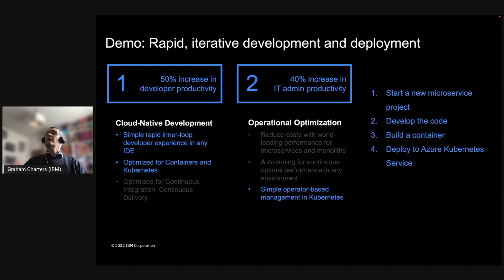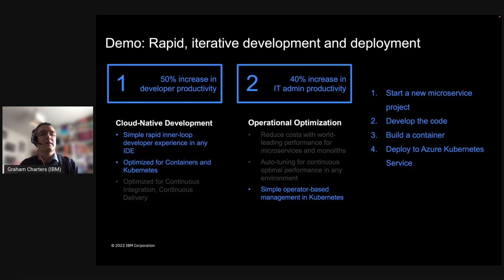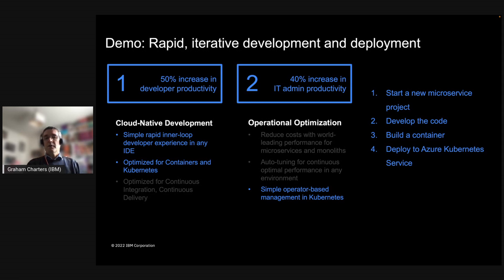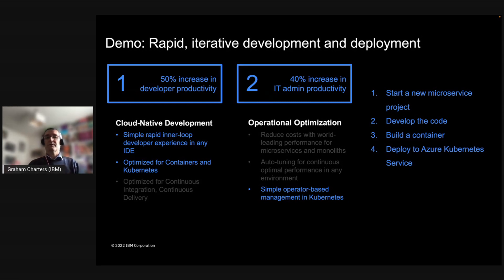So I've talked probably longer than I meant to. What I'd like to do now is a demo. In the demo I'll do four things: create a new microservice project using the Liberty starter; use dev mode to do some code development showing the rapid inner-loop capabilities; use the generated Dockerfile to build a container and talk about how it optimizes for production; and then deploy the application to the Azure Kubernetes Service.